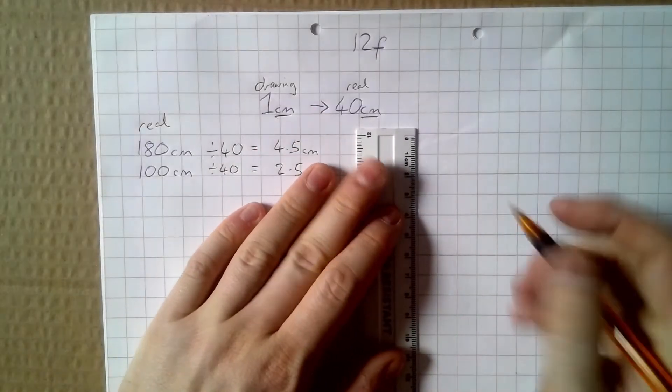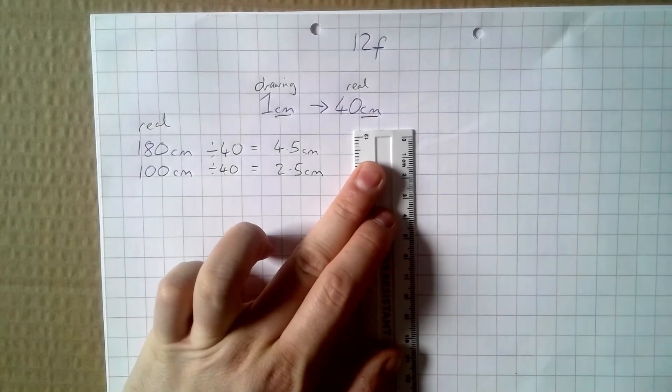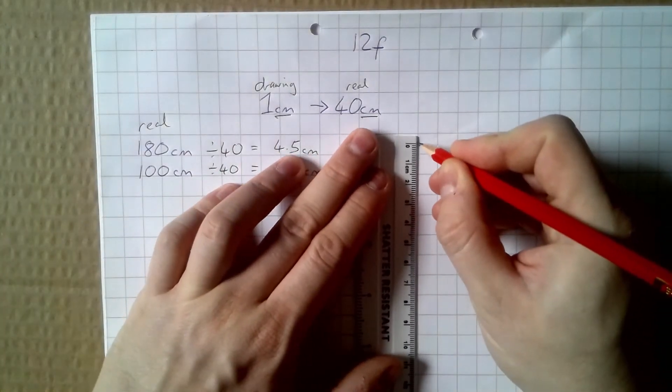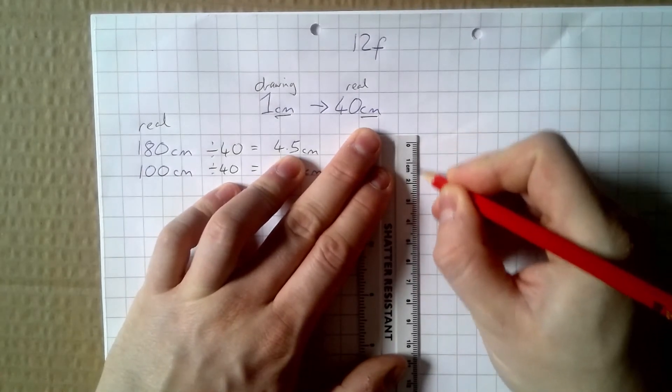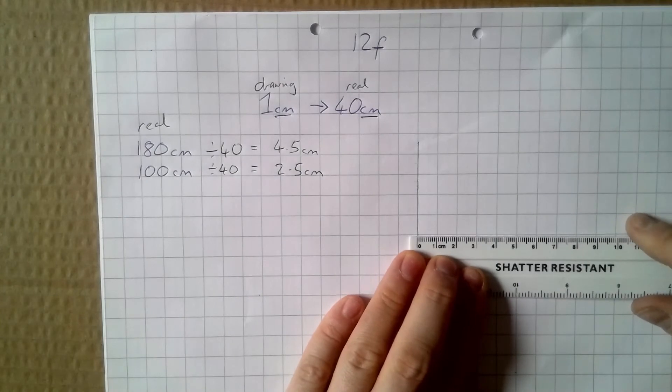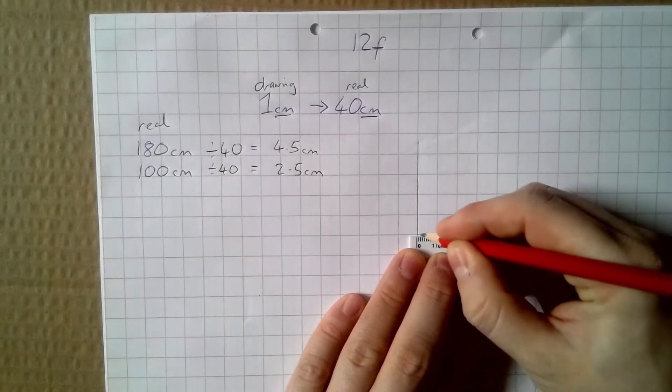So I've got 4.5 to draw in pencil, 4.5 and 2.5 being two sides.